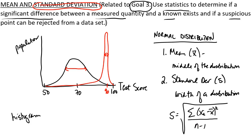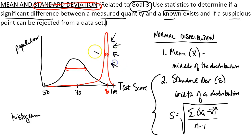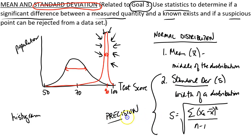Another way to think of standard deviation: which data set — the one shown in black or the one shown in red — is more reproducible? Obviously it's the one in red. When we talk about reproducibility, we're talking about precision. So standard deviation is how we evaluate the precision of a data set, whether that's exam scores or water hardness in Duck Pond and Boone Creek.